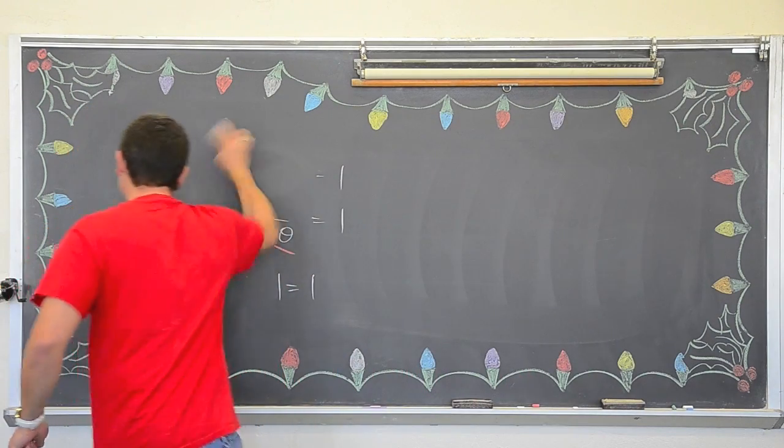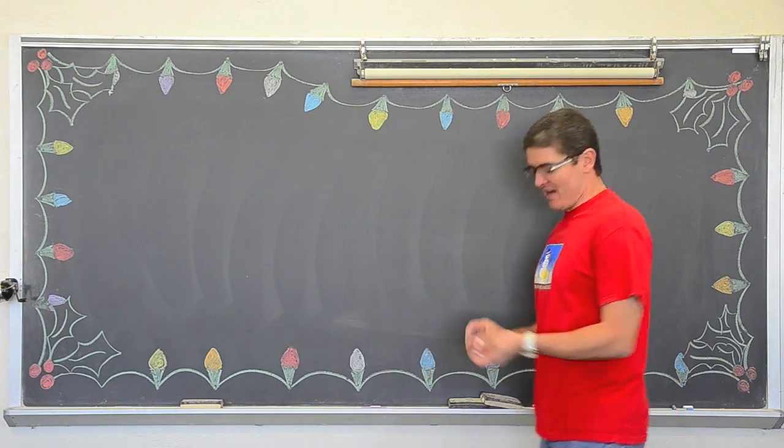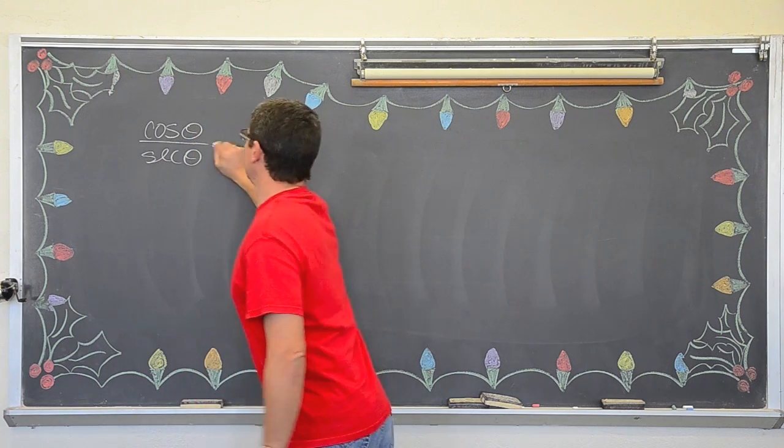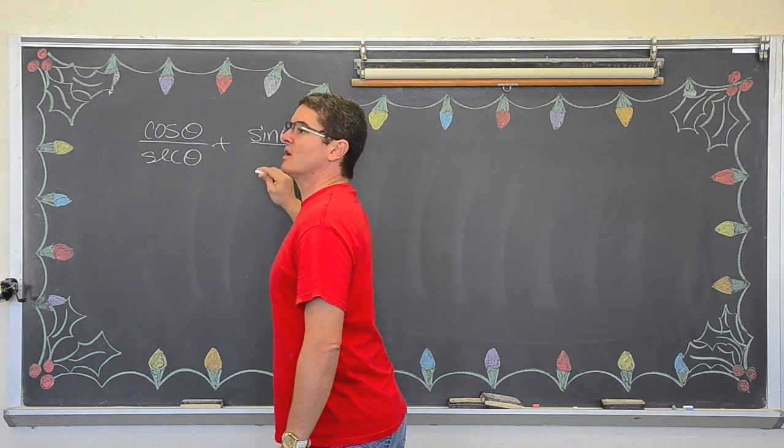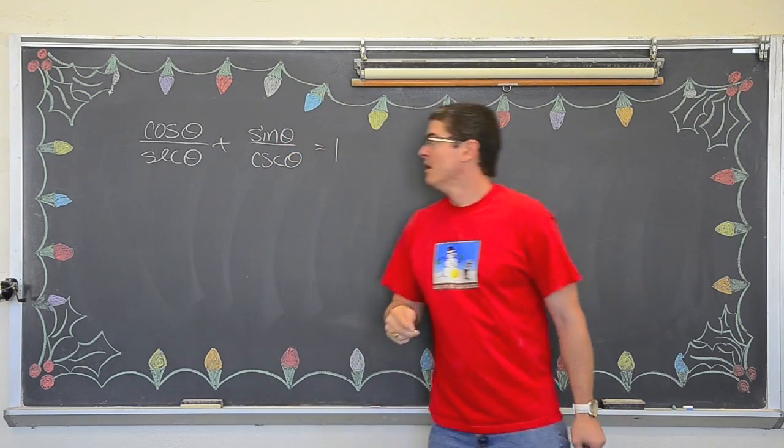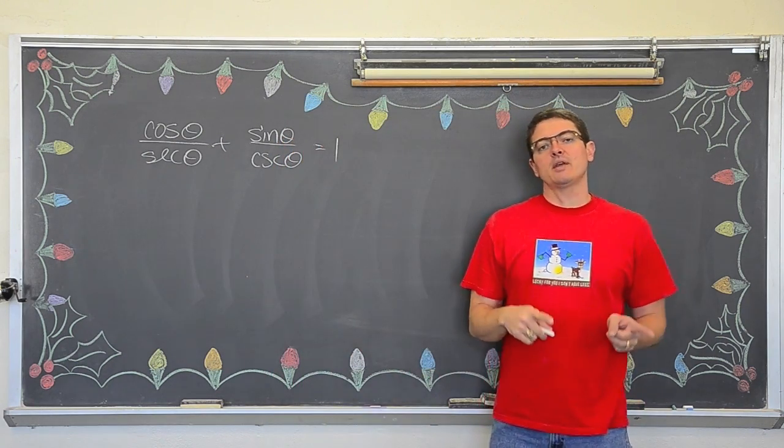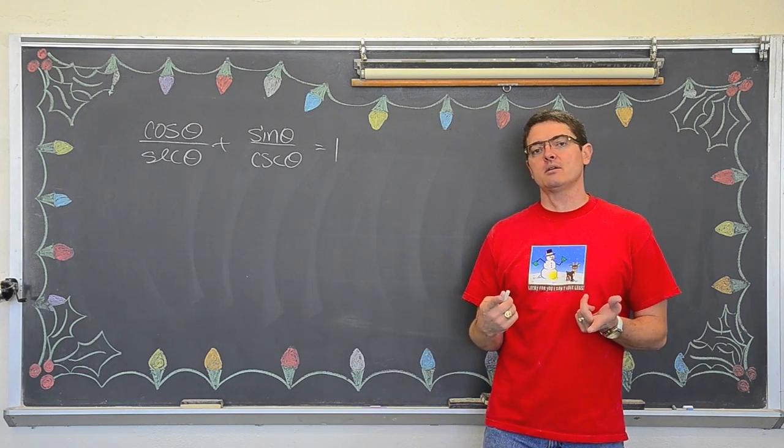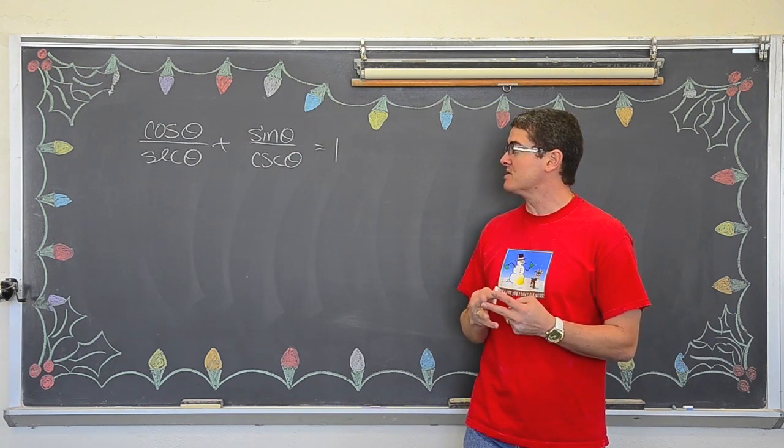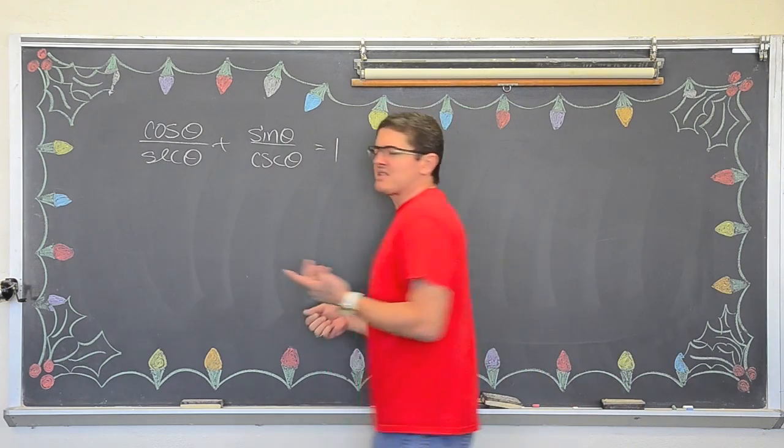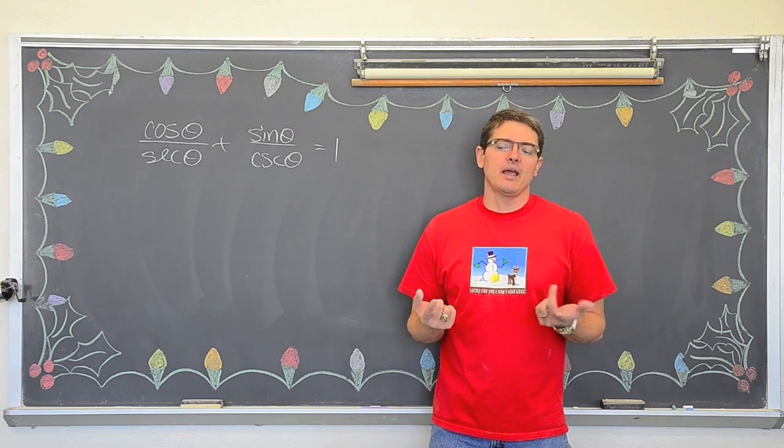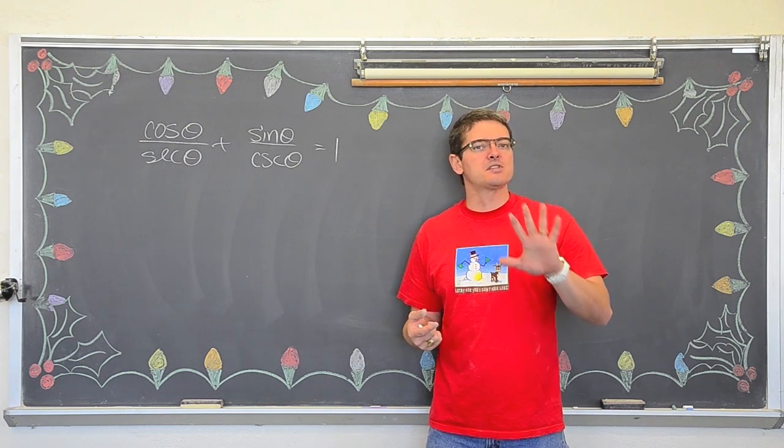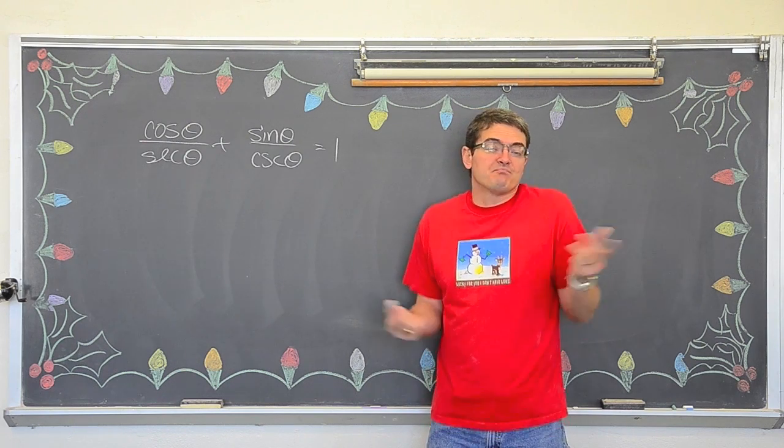Alright, so I am getting excited because I love these problems. Let's take a look at cosine theta over secant theta plus sine theta over cosecant theta equals one. Now on the left side I have two terms. On the right side I only have one. A lot of times when you have a different number of terms on each side of the identity you are going to want to find common denominators and add those two terms together and see what happens. And indeed we can do this. But that is another thing too.